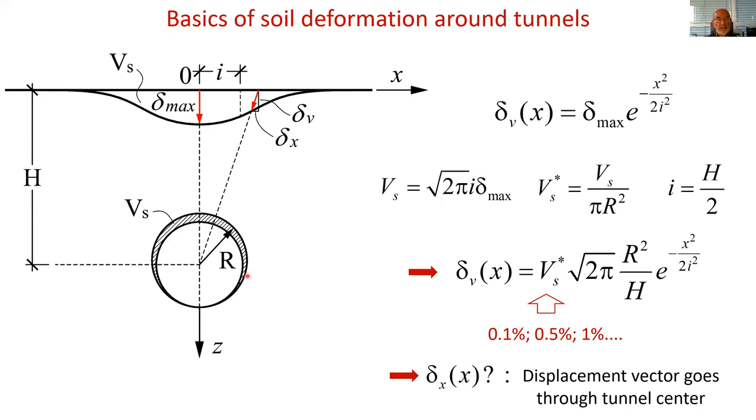In the traditional way of looking at the movements induced by these gaps, I can refer to the relatively comprehensive analysis made by Peck in a report at the 1969 International Conference on Soil Mechanics. He showed that the settlements measured on the surface follow an equation very similar to a Gaussian equation, written here on the right. The reason for these settlements is precisely this gap, represented here as the difference between the outer circle of the shield and the outer circle of the tunnel itself.